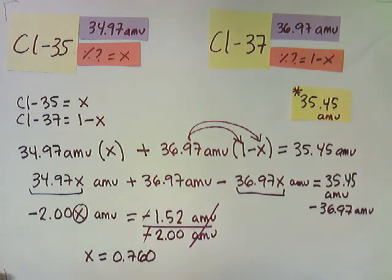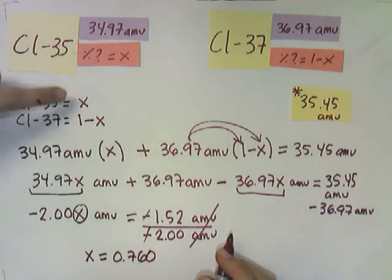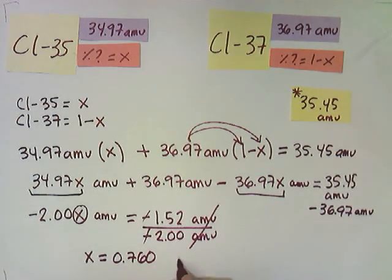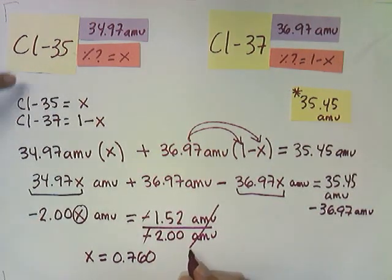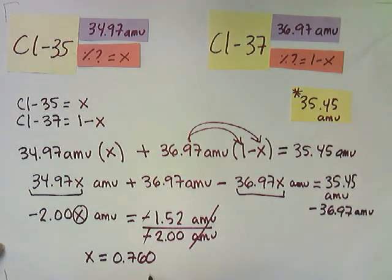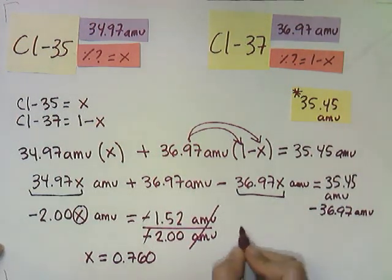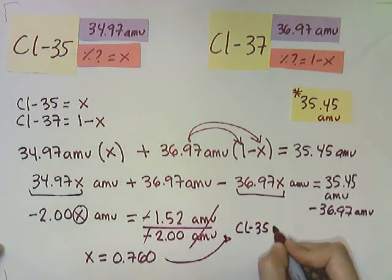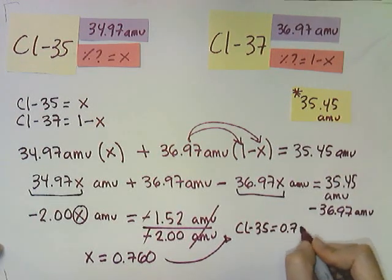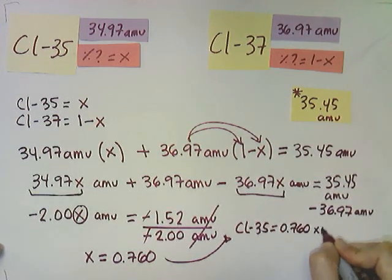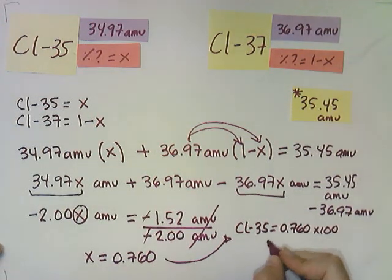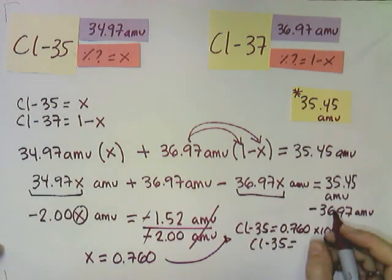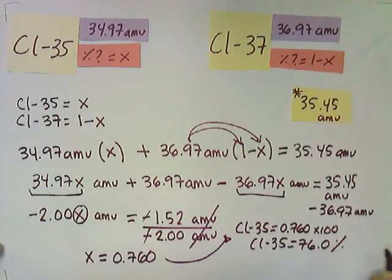Now we're not done yet with our problem. x will be equal to a percentage. So this number I have to multiply times 100 so I can get the percentage for chlorine-35. So I don't have a lot of space here. Let's do it on this side. So for chlorine-35, we would have 0.760 times 100 because of the percentage. So this would be equal to, chlorine-35 is 76.0%. So that's one answer.